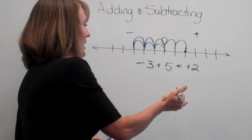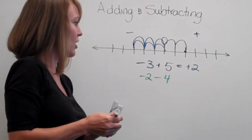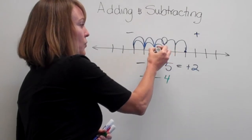All right, let's do another one. Let's say negative 2 minus 4. So we're going to start here at 0. We're going to go negative, so we're going to go negative 1, negative 2.